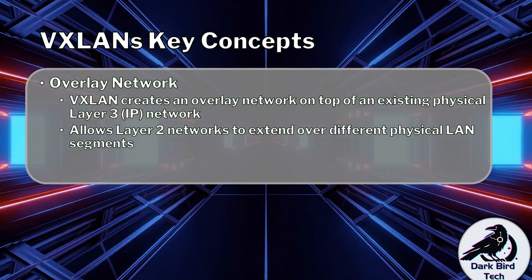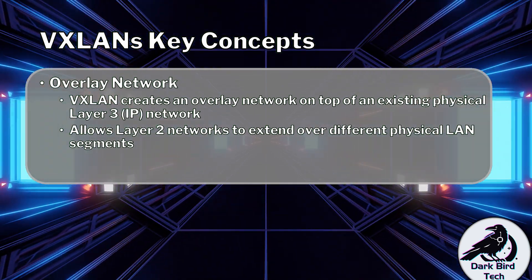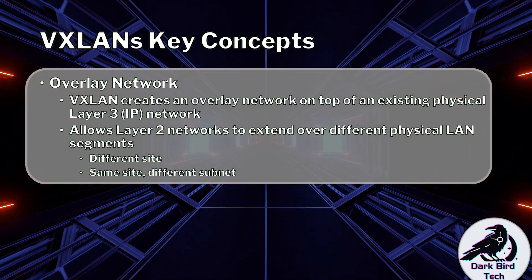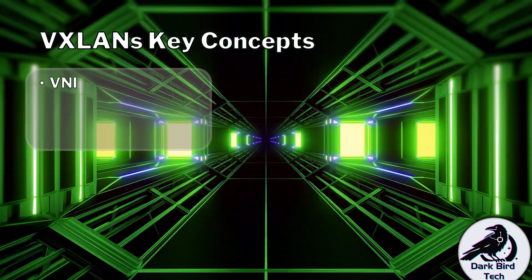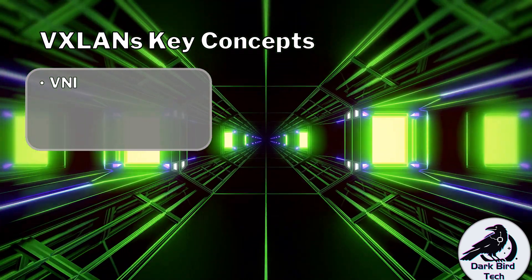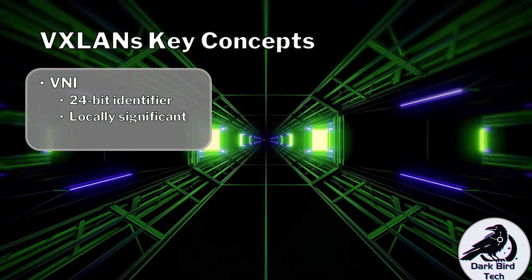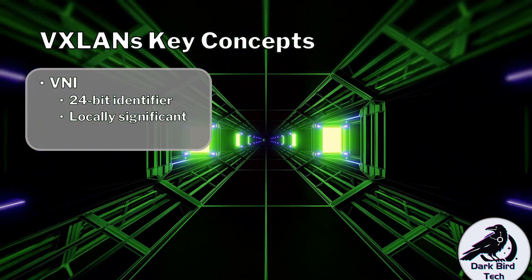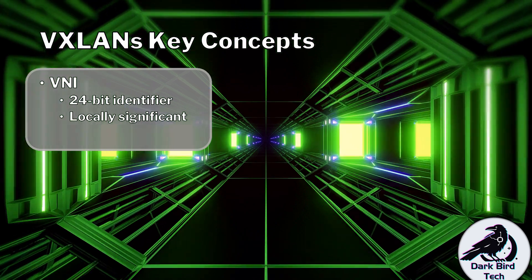There's a diagram coming later, I promise. But the big advantage here is it basically allows us to have the same VXLAN infrastructure at different sites, or at the same site but in different physical subnets. That's pretty cool. So the next thing is we have a new way of identifying these things. We have what's called a VNI, or a VXLAN network identifier. This is a 24-bit identifier instead of the smaller one used by VLANs. Another cool thing is they're locally significant — I can use whatever particular VNI number I wanted on switch A, and on switch B I can use a completely different VNI number for the same VXLAN.